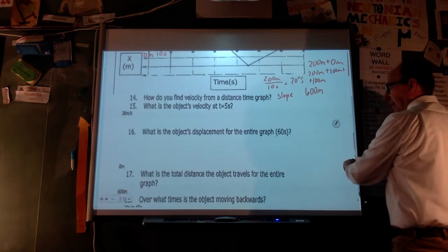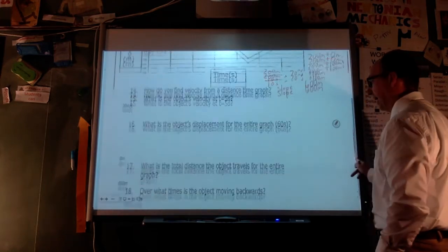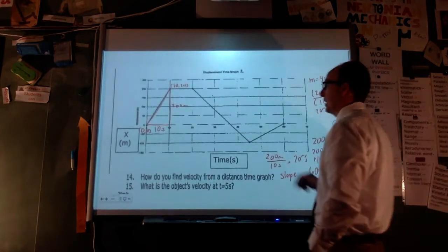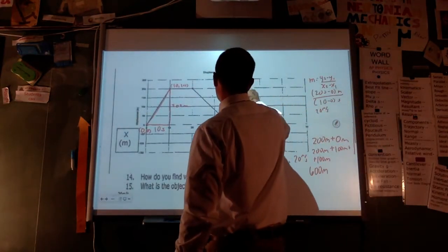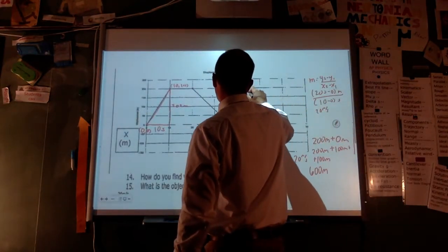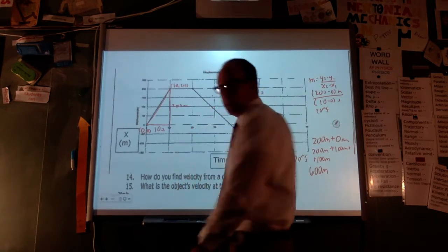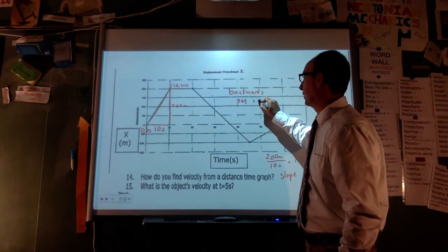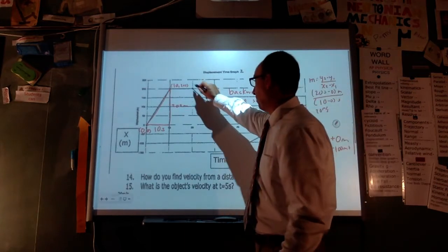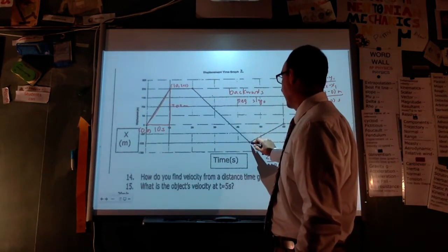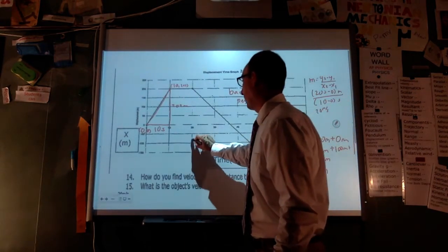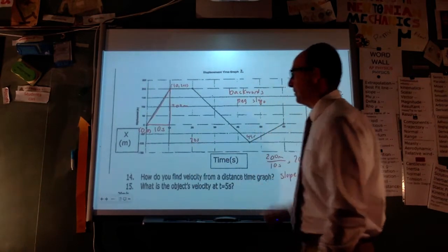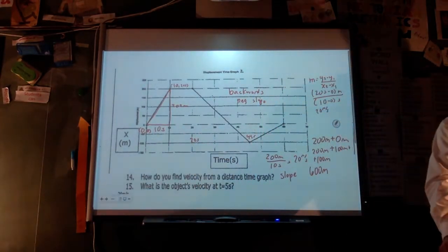At what time is the object moving backwards? On a position-time graph, backwards means a negative slope — whether that's left, backwards, or down. The long descending line here represents a negative slope, which appears to go from about 20 seconds to 45 seconds.